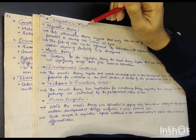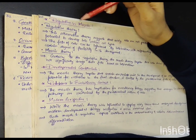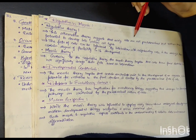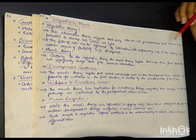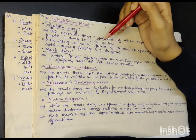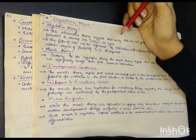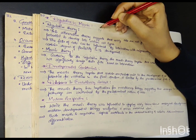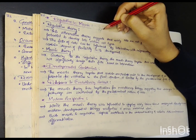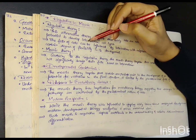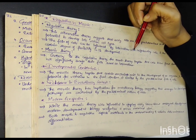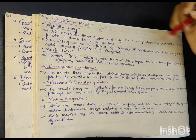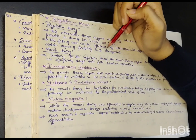Regulative versus mosaic theory: The regulative theory suggests that early cells are not predetermined but rather have the potential to develop into various cell types. In early stages, the cell is not predetermined as to what its fate is going to be in future. The fate of cells can be influenced by interactions with neighboring cells, and the embryo has a certain degree of flexibility in its development.